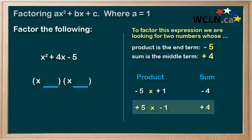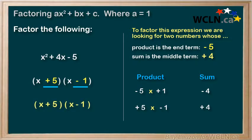So we now know the numbers that go in the back of each bracket are +5 and -1. We can put these numbers in the back of each bracket to complete our factors. We have now factored this trinomial into its binomial factors.